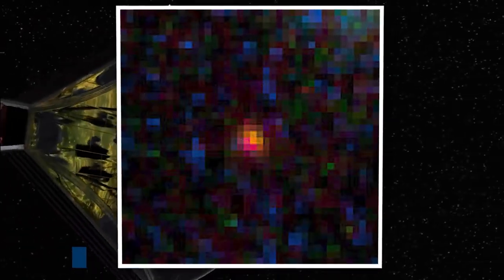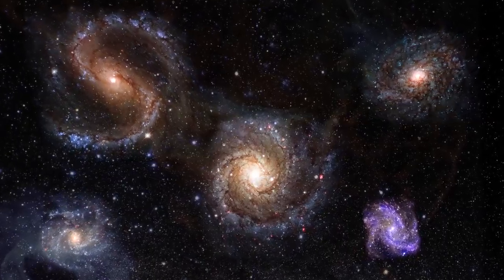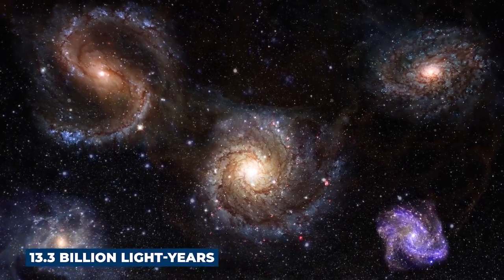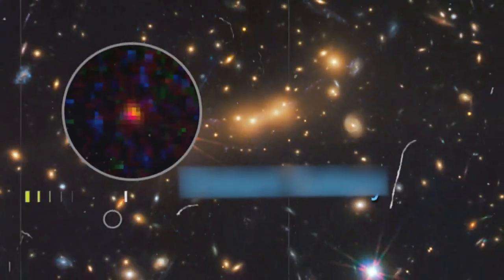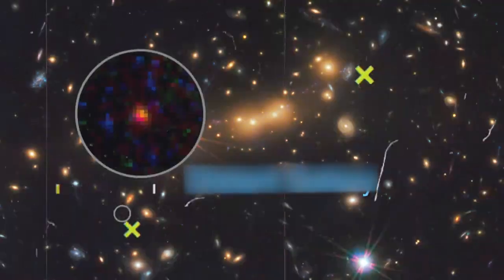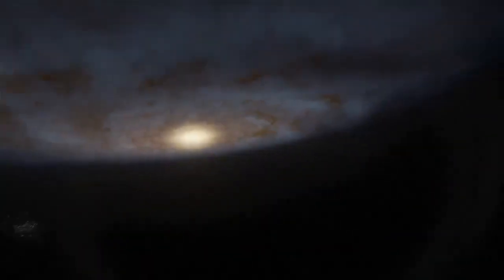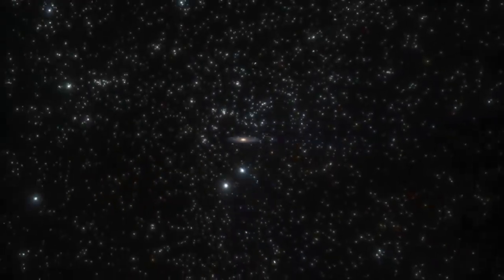One of the most captivating discoveries brought to us by the JWST is the incredible image of MAX 0647JD, a galaxy located approximately 13.3 billion light-years away from Earth. Being one of the farthest galaxies ever imagined, it provides a stunning glimpse into the very early universe, just 420 million years after the Big Bang.